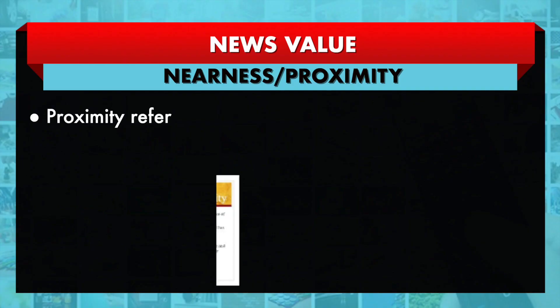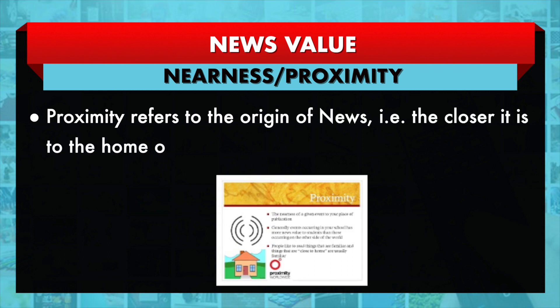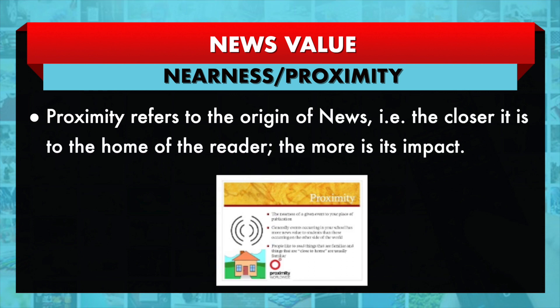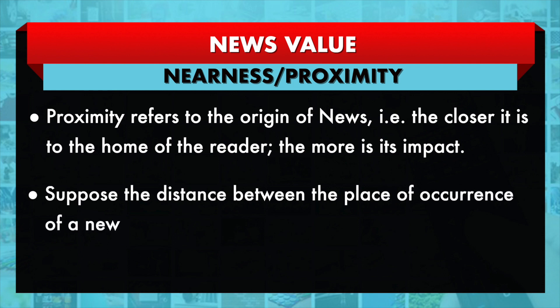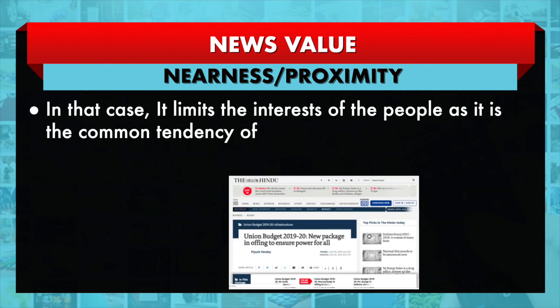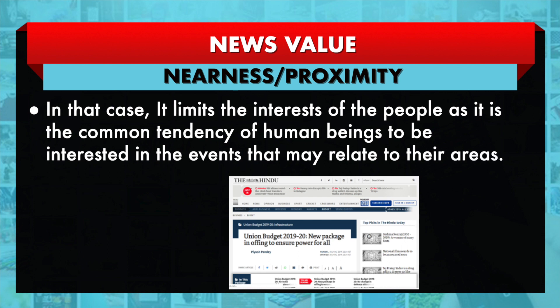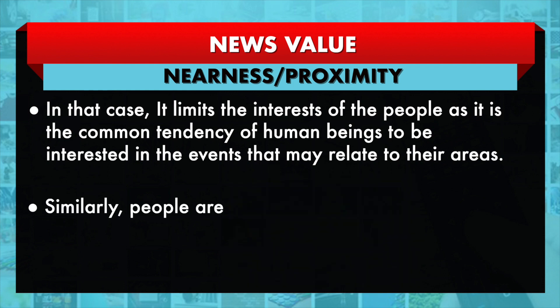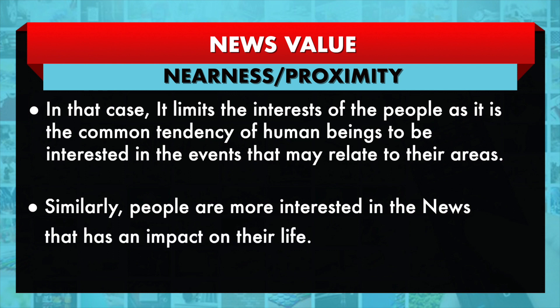The second news value is nearness or proximity. Proximity refers to the origin of the news — the closer it is to the home of the reader, the more is its impact. If the distance between the place of occurrence of a news item and the place of publication is large, it limits the interest of the people, as it is the common tendency of human beings to be interested in events that relate to their areas. Similarly, people are more interested in news that has an impact on their life. For instance, the price of onions or tomatoes in the local area makes people more alert.